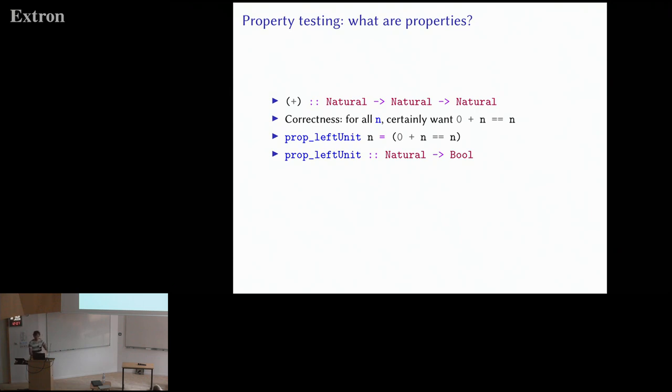So what I want to capture in this talk as a property is anything that goes from some domain, from some range of elements to the Booleans. For me, that's what a property means. Indeed, our specific property of checking that zero is a left unit for addition is a property on the naturals.